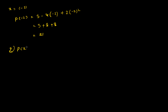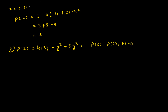The second question gives p(y) equals 4 plus 3y minus y squared plus 5y cubed, and we need to find p(0), p(2), and p(-1). For p(0), we substitute y equals 0: 4 plus 3 times 0 minus 0 squared plus 5 times 0 cubed, giving the answer 4.